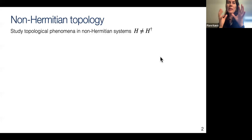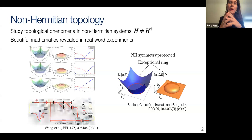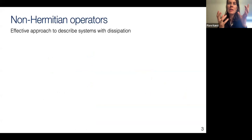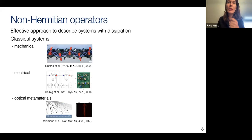Non-Hermitian topology means we study topological phenomena in non-Hermitian systems, assuming a Hamiltonian or matrix that is non-Hermitian — not equal to its adjoint. This has beautiful mathematical properties that can be seen in real-world experiments, such as a single-photon interferometry experiment where you can see so-called exceptional rings. One should think of non-Hermitian operators as an effective approach to describe systems with dissipation. They appear in mechanical metamaterials, electrical circuits, and optical metamaterials.